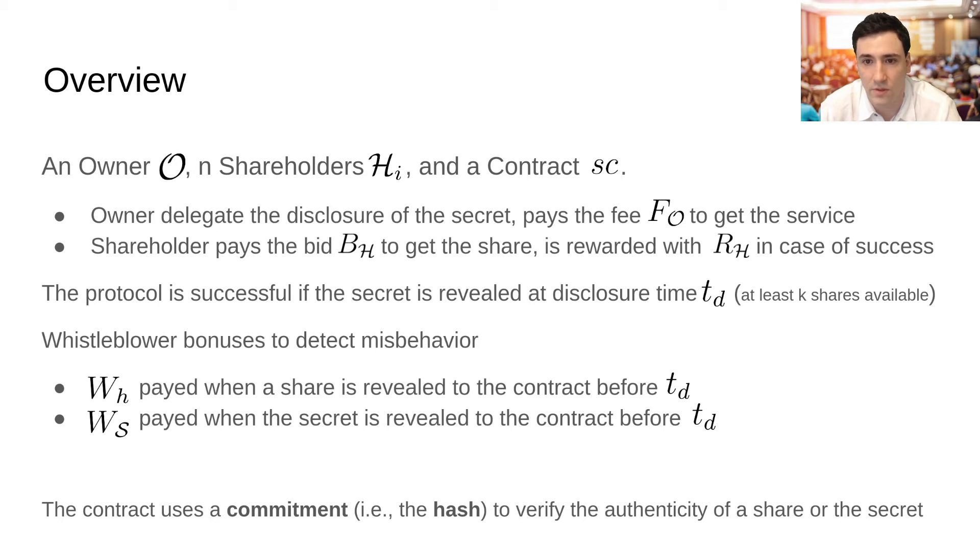The disclosure of the secret is delegated to the shareholders. Each shareholder pays to the contract a bid to get his share, and is rewarded with the reward RH, in case the protocol ends successfully. The protocol is successful only if the secret is revealed after disclosure time. Since we are using Shamir Secret Sharing for the generation of the shares, this means that at least K shares needs to be submitted to the contract after disclosure time.